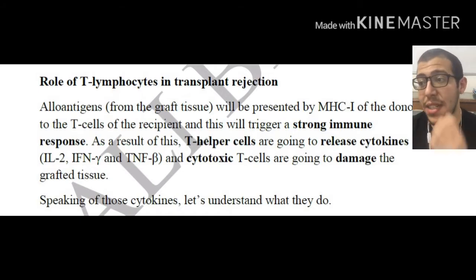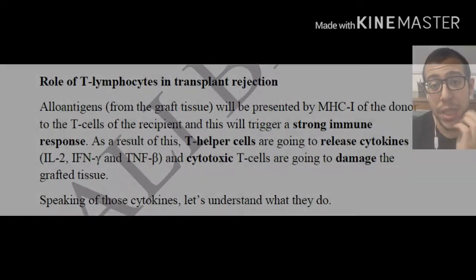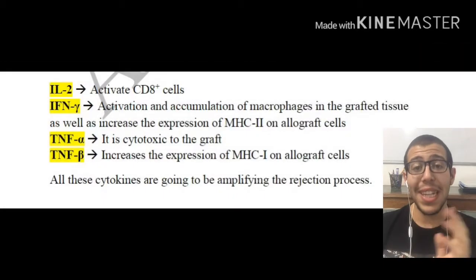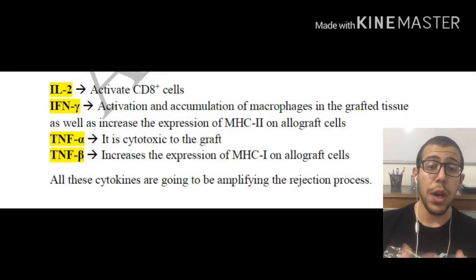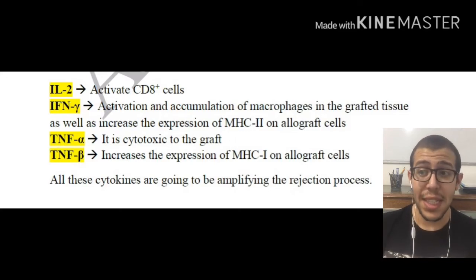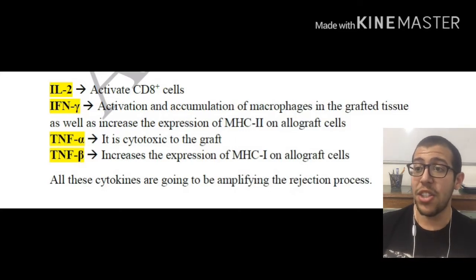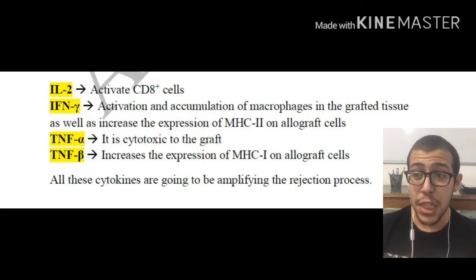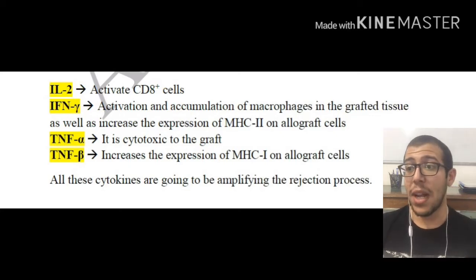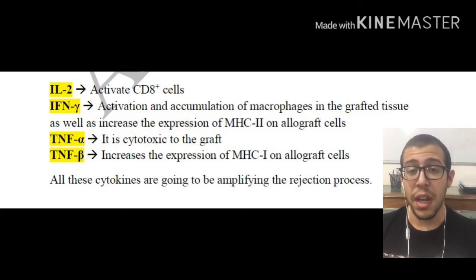Now let's understand what each of these cytokines does. Interleukin 2 is going to be activating the cytotoxic T cells. Interferon gamma is going to be leading to the activation and accumulation of macrophages in the grafted tissue, as well as increasing the expression of MHC class 2 on allograft cells.